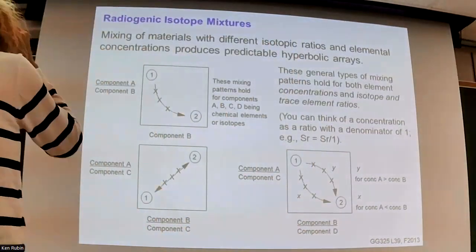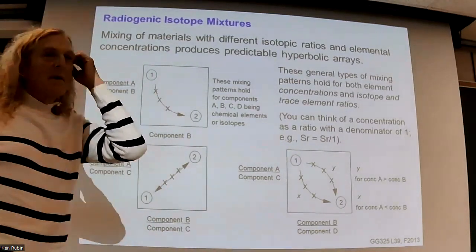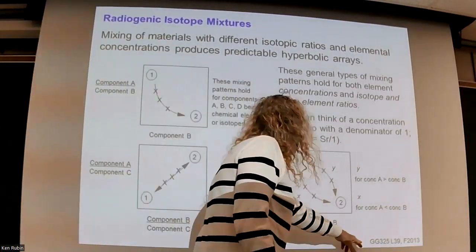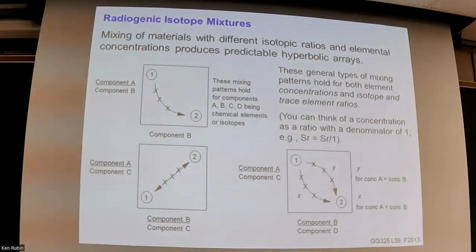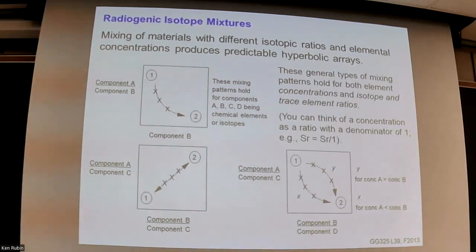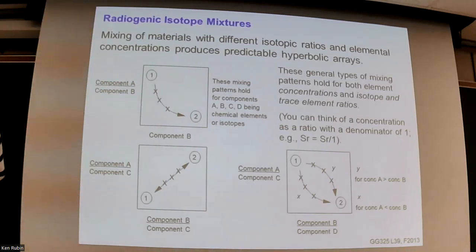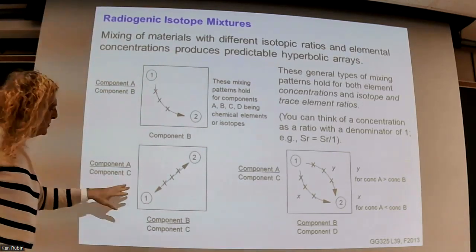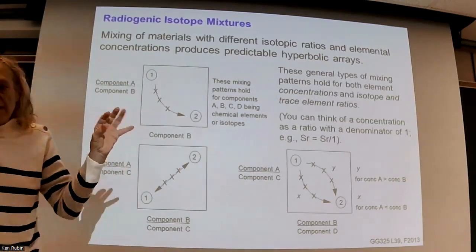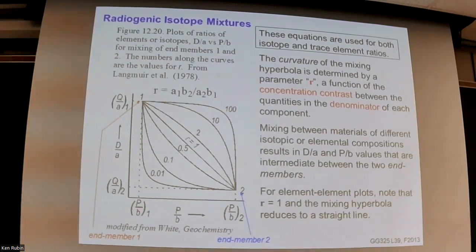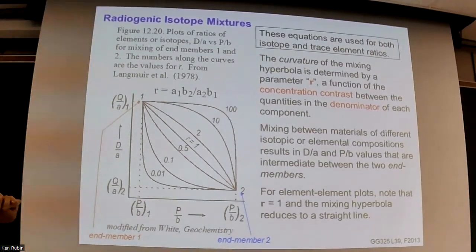This is where we ended up last time, so I'm going to finish this stuff from the end of Lecture 29. We're talking about chemical mixtures and these different kinds of diagrams where we plot different chemicals against each other in different ways, and the two end members being mixed — similar to what we talked about when discussing estuaries.